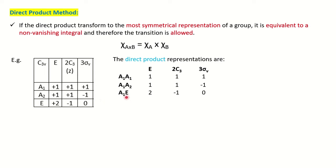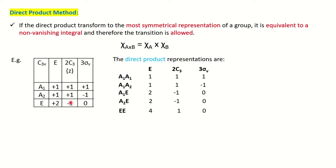For A1 × E, multiply the characters of A1 and E, giving 2, −1, 0. You can find this in the character table — it corresponds to E. So the irreducible representation for A1 × E is E. For E × E, multiply the character of E by itself to get 4, 1, 0. This is a reducible representation because it is not directly in the character table, so it can be reduced further.